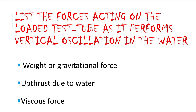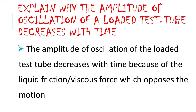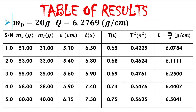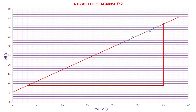Finally, we are asked to explain why the amplitude of oscillation of a loaded test tube decreases with time. The amplitude decreases because of the viscous force, also referred to as liquid friction. This viscous force opposes the motion of the vibrating body, causing the amplitude to reduce over time. These are all the questions asked, and I am very convinced this will help you immensely.